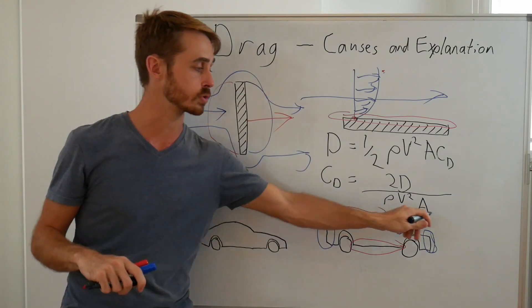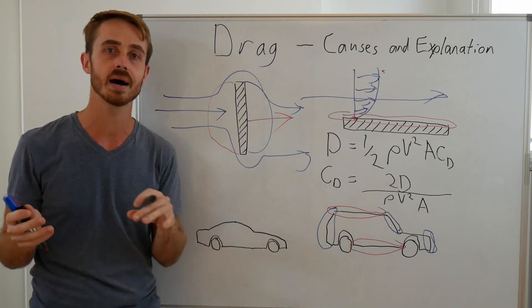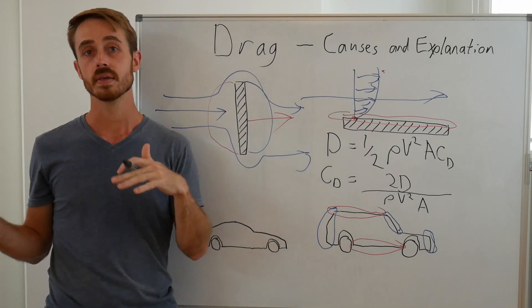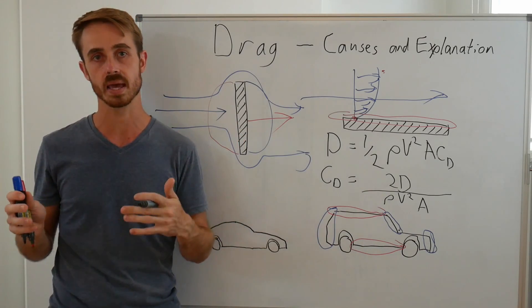Cars though always use the frontal area. Something like a Formula One car, even though their frontal area may change with little area modifications, they'll keep it at a constant 1.47 meters squared.